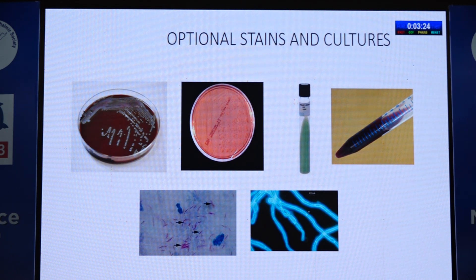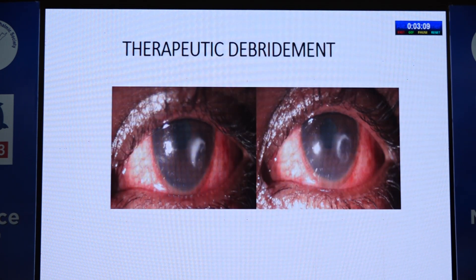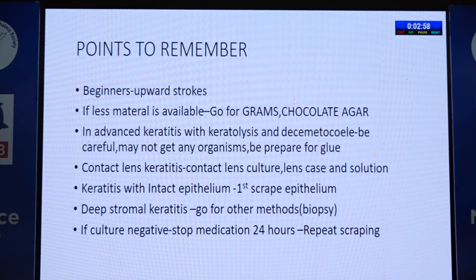Optional culture media include MacConkey agar if you suspect enteric organisms, Lowenstein-Jensen for mycobacteria, and NNN medium with E. coli if you suspect acanthamoeba. Special stains include acid fast and calcofluorite white, and Giemsa for fungi. Corneal scraping can also be used therapeutically to decrease organism load and allow better drug penetration.